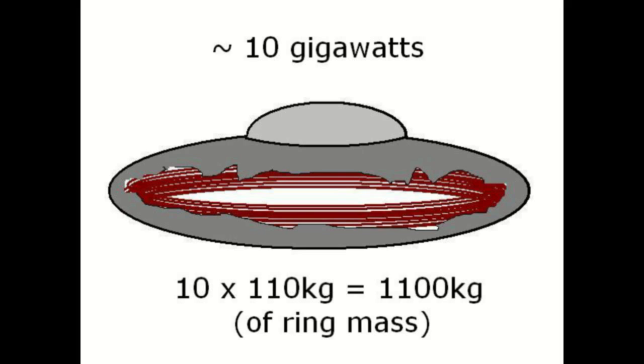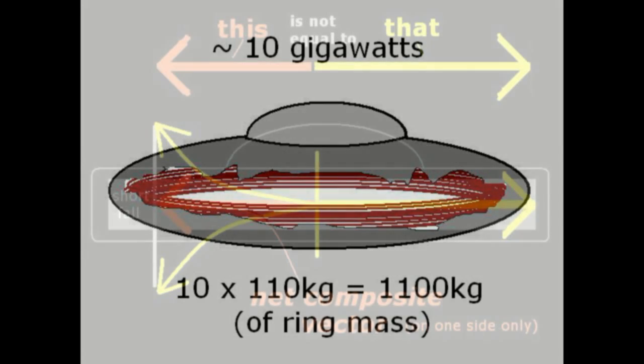Our craft is now 1100 kilograms of carbon nanotube ring and 8900 kilograms of craft, and our overall apparent power output, considering the inefficiency of the entire process, might be on the order of 10 gigawatts instead of the previous 4.8 gigawatts, or about five Hoover dams running at full capacity.